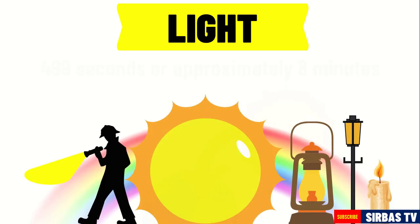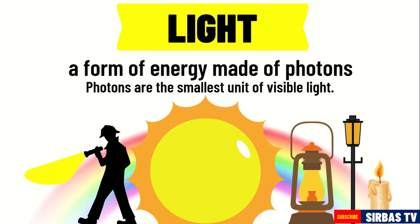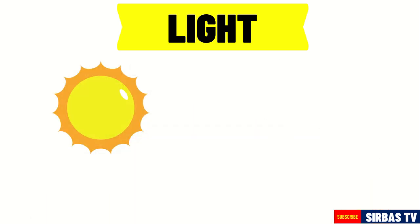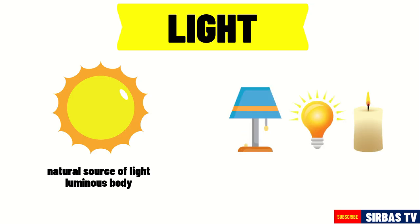Light is a form of energy made of photons. Photons are the smallest unit of visible light. Our main source of light energy is the sun. The sun is an example of a natural source of light and is also considered a luminous body — an object capable of producing its own light. Other sources such as lamps, bulbs, and candles are examples of artificial sources of light.